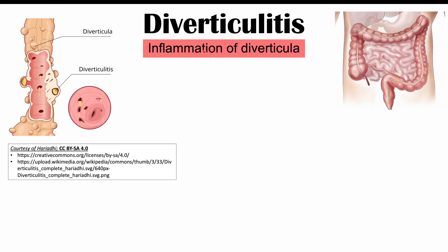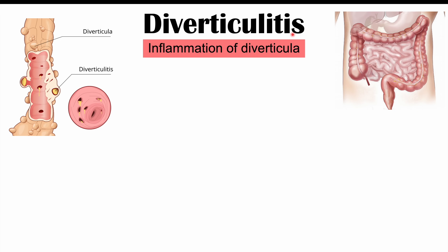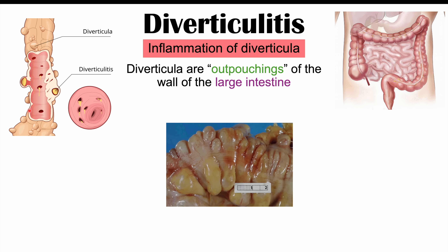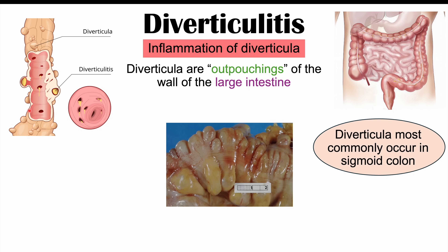Diverticulitis is inflammation of diverticula — 'itis' refers to inflammation, and 'diverticula' refers to outpouchings of the wall of the large intestine. These are bulges that pop out of the sides of the large intestine due to weakening of the bowel wall, and they can most commonly be found in the sigmoid colon — the S-shaped part of the colon near the rectum.